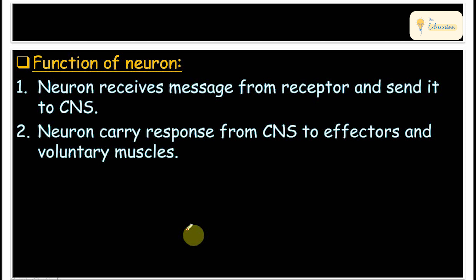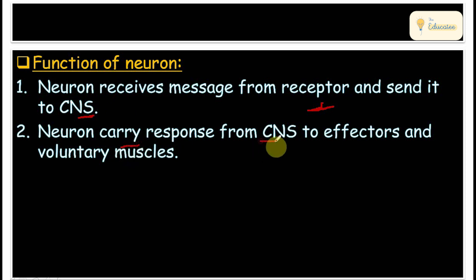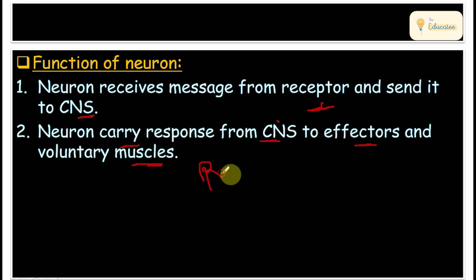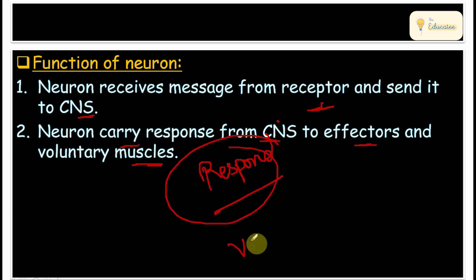Now let's see the functions of neurons. First, neurons receive messages from receptors. Then, with the help of these neurons, the message reaches the central nervous system (CNS). The CNS then carries the response back, and through effectors — voluntary muscles — we produce a response. This is the overall working and function of neurons.